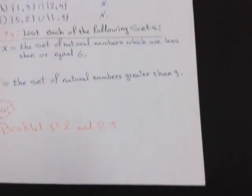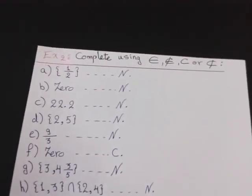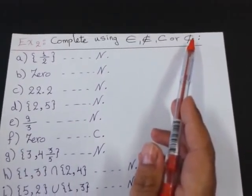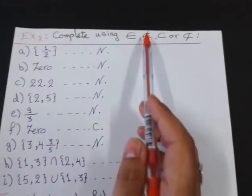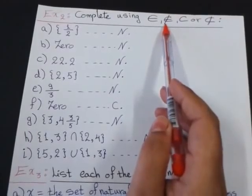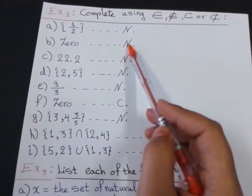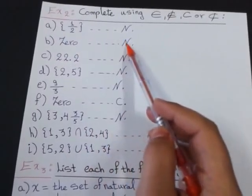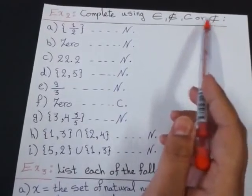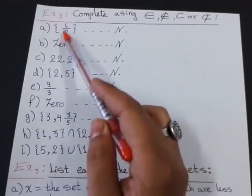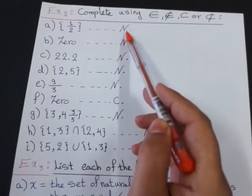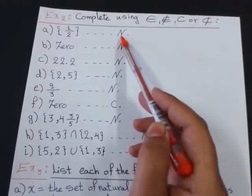Okay, let's solve example number 2 together. Complete using element or not element, subset or not subset. Let's remember together when we use element or not element. When I see element and set. Element without braces and set. When we use subset or not subset. When I see set and set. Set between braces or set with a name. It's a capital letter. So, this is a capital letter, so this is a name of the set.